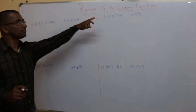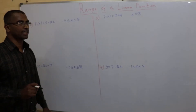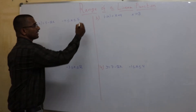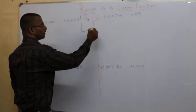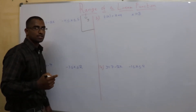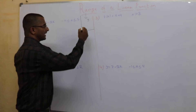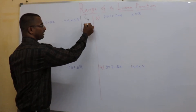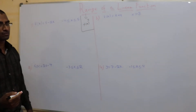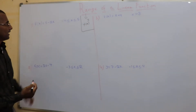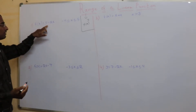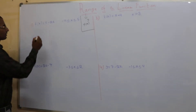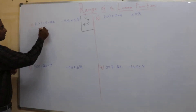Finding the range of a linear function. Range is nothing but the values of y — what all values can y take, or what all values can f take. Look at this example: f(x) = 5 minus 2x, or y = 5 minus 2x.